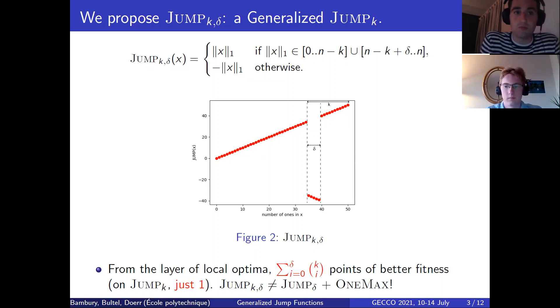To get rid of this problem, we propose a new version of Jump_k which we call Jump_{k,δ}. So we keep parameter k to represent the hamming distance between the local optima and the global optimum. But we introduce a new parameter delta, which you can see on the chart, that encodes the size of the valley, which is to say the number of fitness layers who have their fitness switched. So delta can be any value smaller than k, and in particular, the fitness gap can be any distance from the global optima.